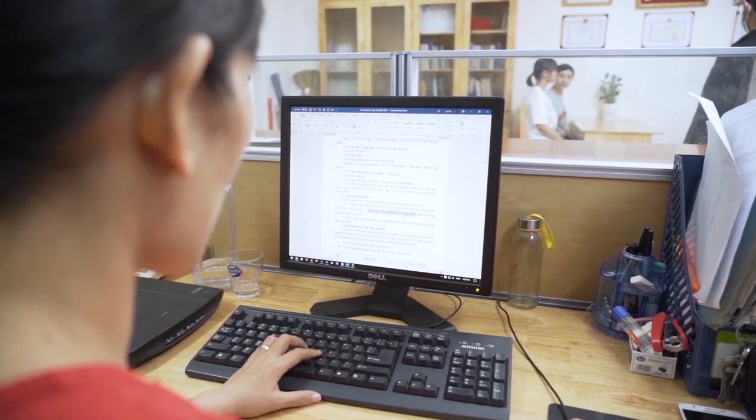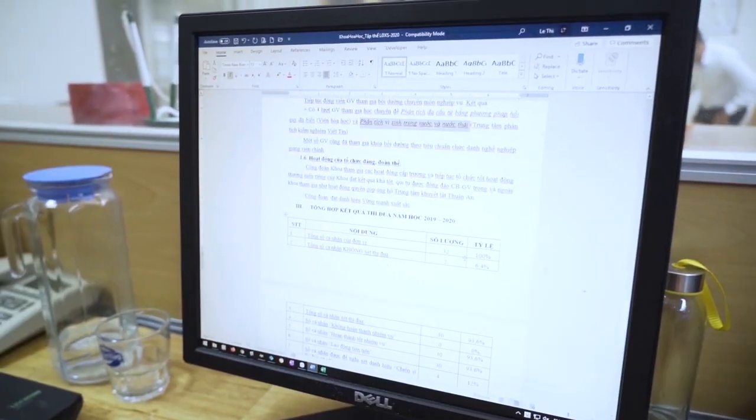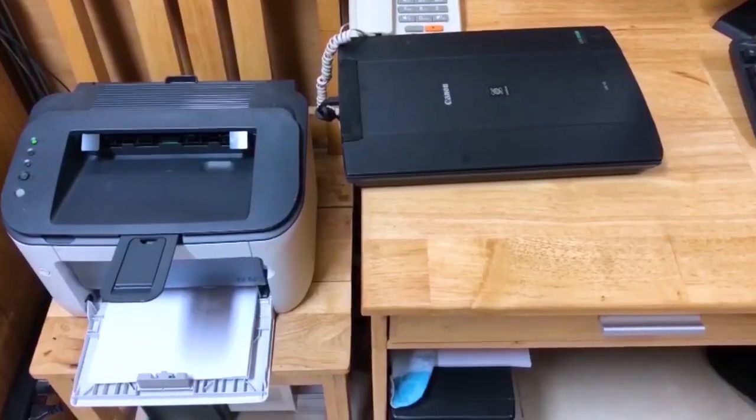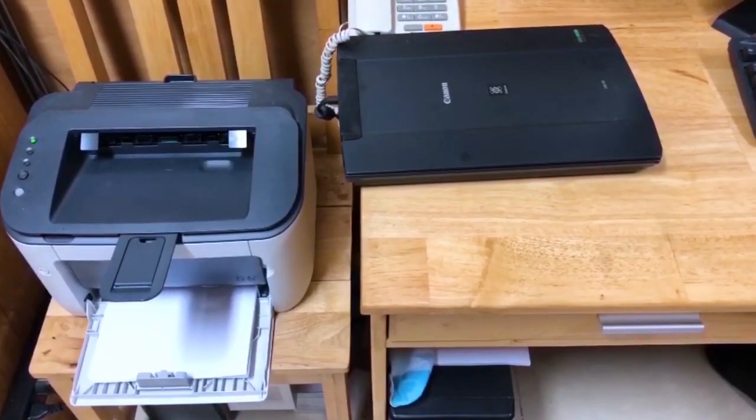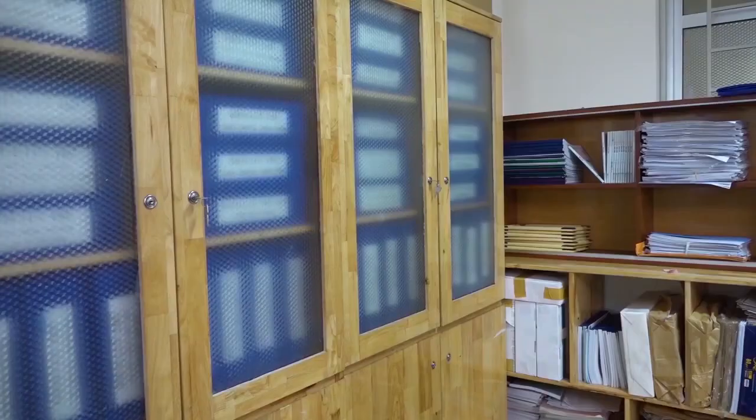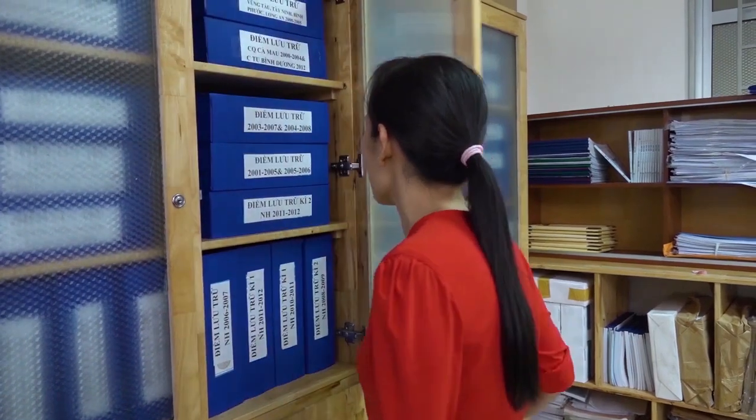The department office room is the workplace of the supporting staff, fully equipped with necessary facilities such as computers, printers, scanners, and internet systems to handle work effectively. Students can come see the supporting staff for counseling on a wide range of issues, including training, policies, and scholarships.